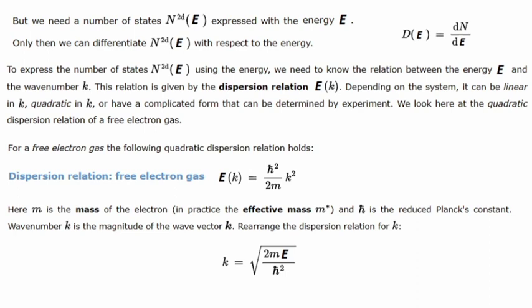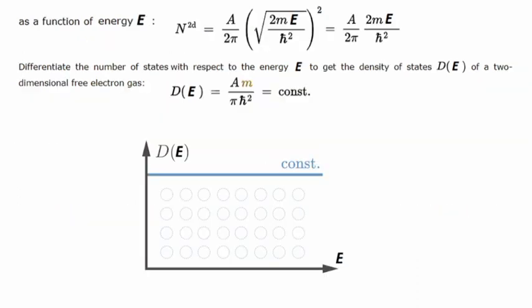For a free electron gas, the quadratic dispersion relation holds: E(k) = ℏ²k²/2m, giving k = √(2mE/ℏ²). Substituting into N₂D: N₂D = (A/2π)(2mE/ℏ²). For the density of states we differentiate with respect to energy: g(E) = dN/dE = Am/(πℏ²), which is a constant. So in the two-dimensional electron gas the density of states is constant with respect to energy.